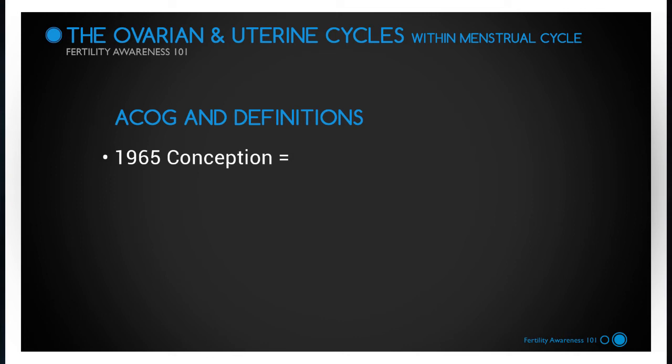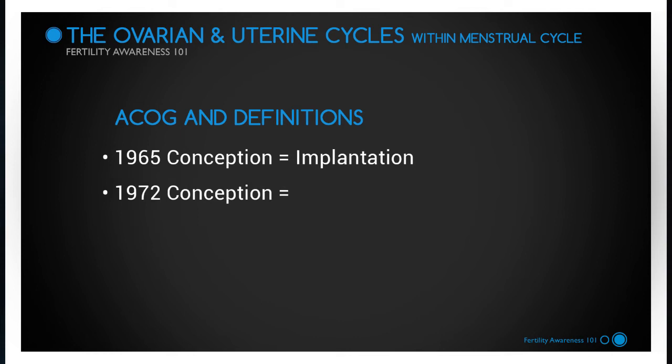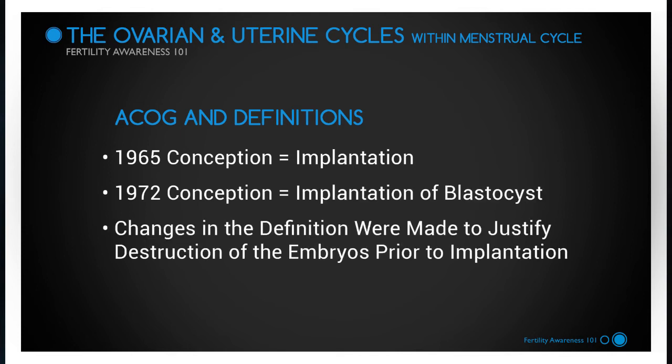If, on the other hand, there has been no conception, then a new cycle begins with menses as the uterus sheds its lining in anticipation of preparing anew for conception in the next cycle. In 1965, the ACOG, or the American Congress of Obstetricians and Gynecologists, changed the definition of conception to implantation of a fertilized ovum. Again in 1972, ACOG changed the definition of conception to the implantation of the blastocyst. These changes were made to justify the destruction of embryos prior to implantation, which does not occur until the embryo is six to twelve days old. The Catholic Church has never accepted these changes of definition.